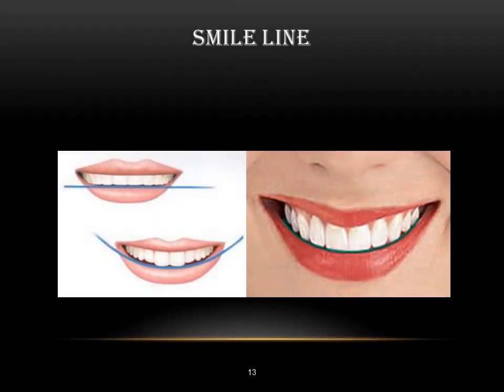Another important line is the smile line. The smile line represents the position of the incisal edges of the upper anterior teeth in relation to the lower lip. This is a very important line in our design. It takes the shape of the lower lip; therefore, the smile line should not be straight — it has the same curvature of the lower lip.